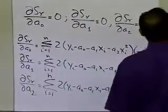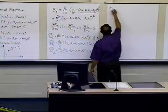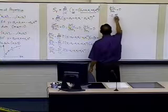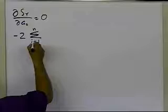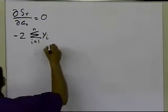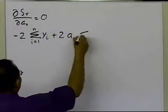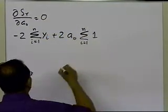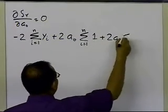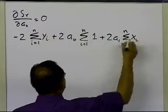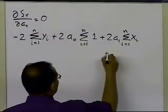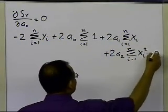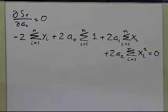So what do I get as the first equation? From del Sr by del a0 equal to 0, I'll get minus 2 summation i equals 1 to n of yi, plus 2 a0 summation 1 from i equals 1 to n, plus 2 a1 summation i equals 1 to n of xi, plus 2 a2 summation i equals 1 to n of xi squared equal to 0. That's what I'm going to get from the first equation.